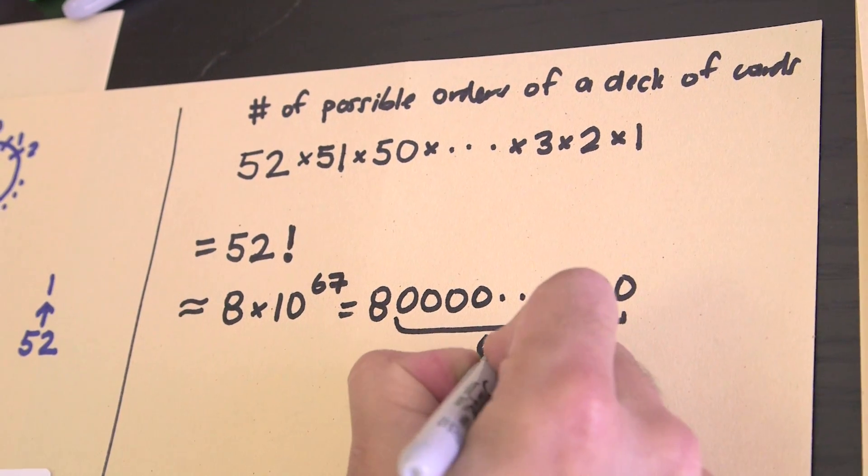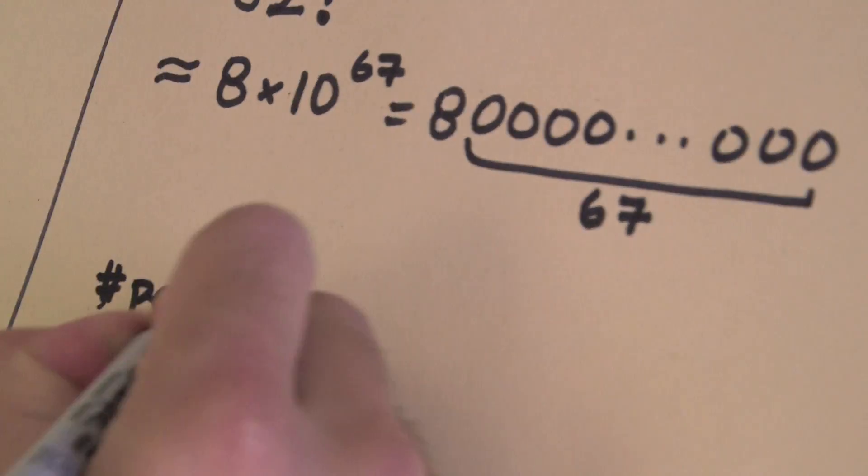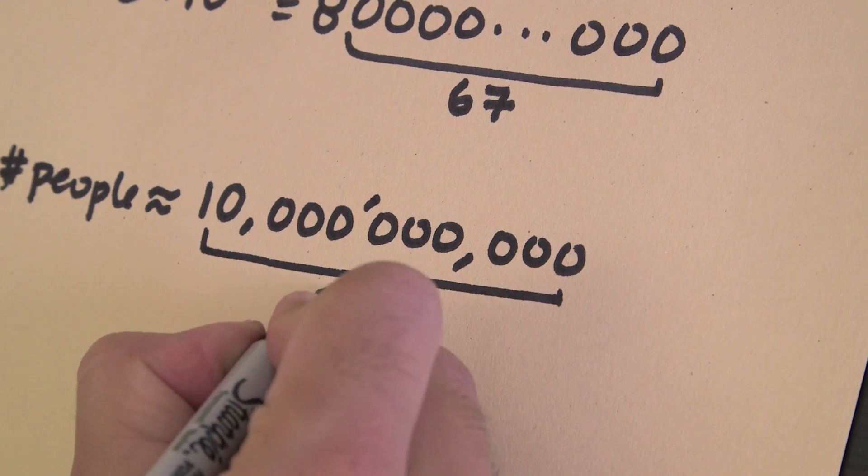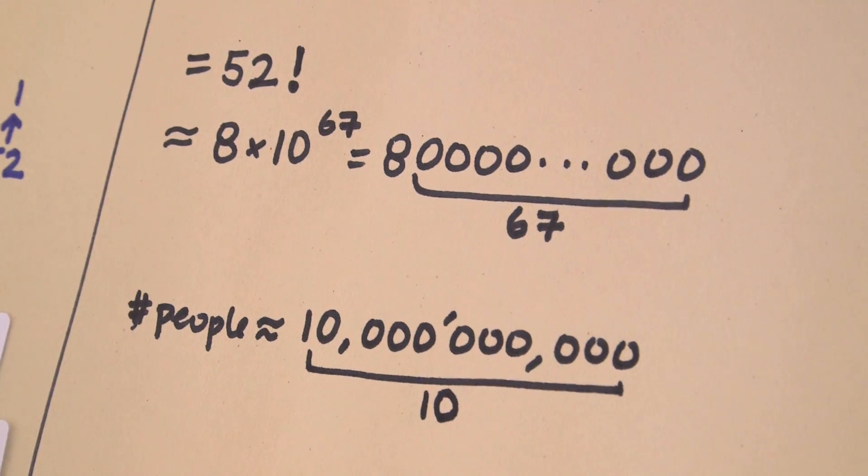To put it into perspective: how many people are there in the world? About 10 billion — that's 10 to the 10. In English, a billion is a thousand millions — so that's only 10 zeros. Imagine if every person was playing cards nonstop for their whole lives — this wouldn't even come close to the number of possibilities. Even though we think of this as a very finite thing, for practical purposes it's infinite — we're never going to be able to see all the possibilities.